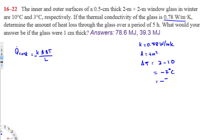We use Kelvin because the thermal conductivity is given in watts per meter Kelvin, so we want the Kelvin units to cancel. The length L = 0.5 centimeters = 0.5 × 10⁻² meters, since there are 100 centimeters per meter.